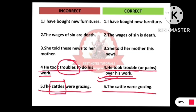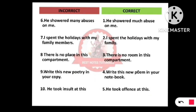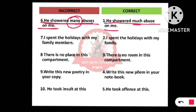Number six: 'She showered many abuses on me.' This means somebody is using bad words for you. Instead of 'many,' you should use 'much.' The correct sentence is: 'He showered much abuse on me.' Use 'much abuse,' not 'many abuses.'